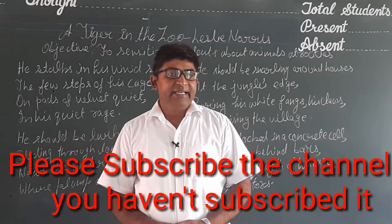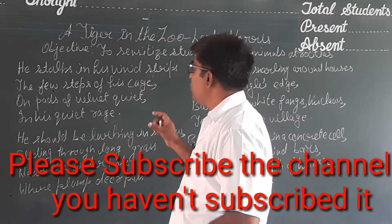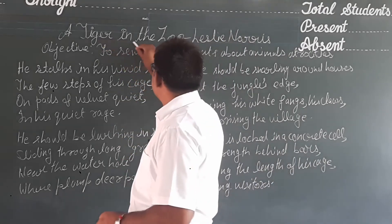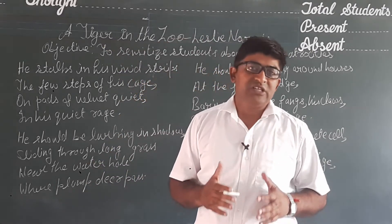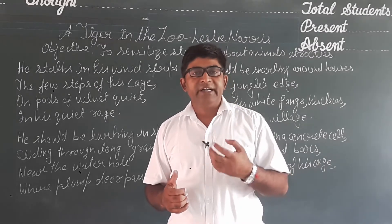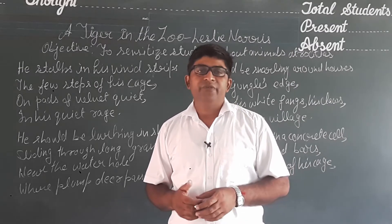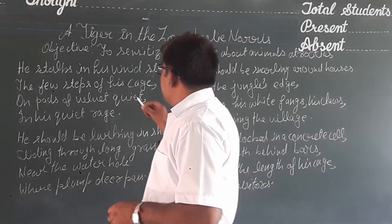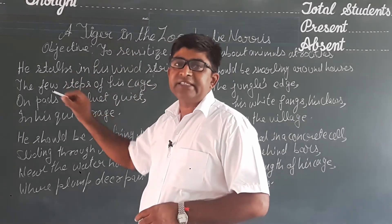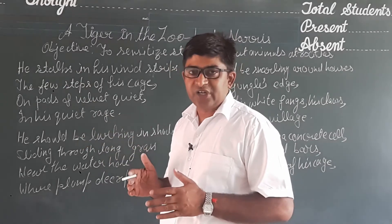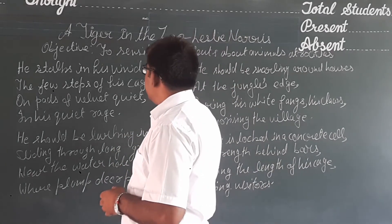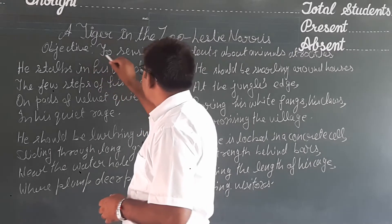Hello and welcome, students. Today in this video we shall learn about a very small and beautiful poem written by Leslie Norris. The name of the poem is 'A Tiger in the Zoo.' We shall learn about the summary, the explanation, and the critical analysis of the poem. The objective of the poem is very simple: the poet wants to educate children regarding the atrocities faced by animals and the tortures given by human beings to animals.